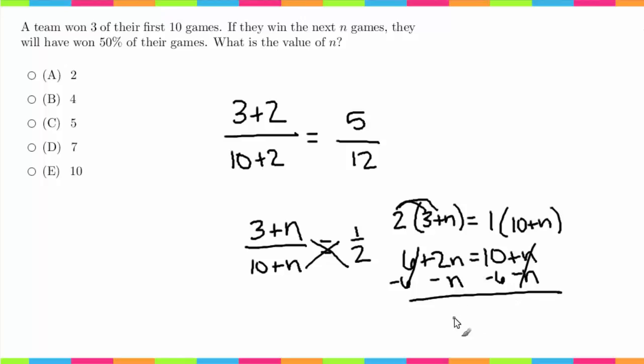I'm left with n = 4, so in this case they will have to play and win 4 games. Just to verify that for you, 3 + 4 over 10 + 4 equals 7 out of 14, which in fact equals 1/2. Thank you so much for watching, good luck with your studies, and I'll see you next video.